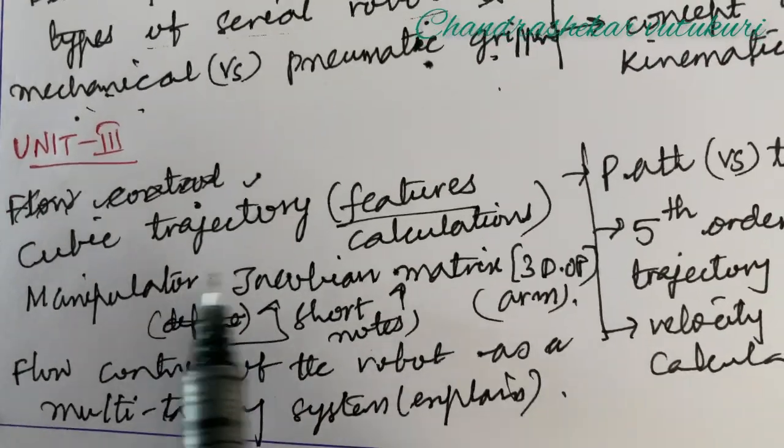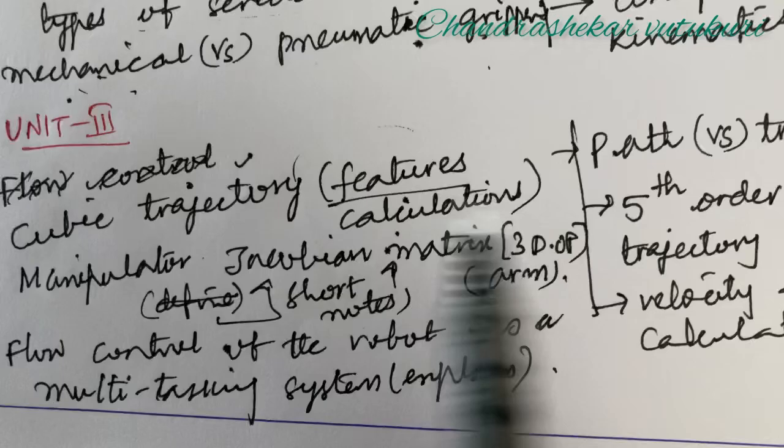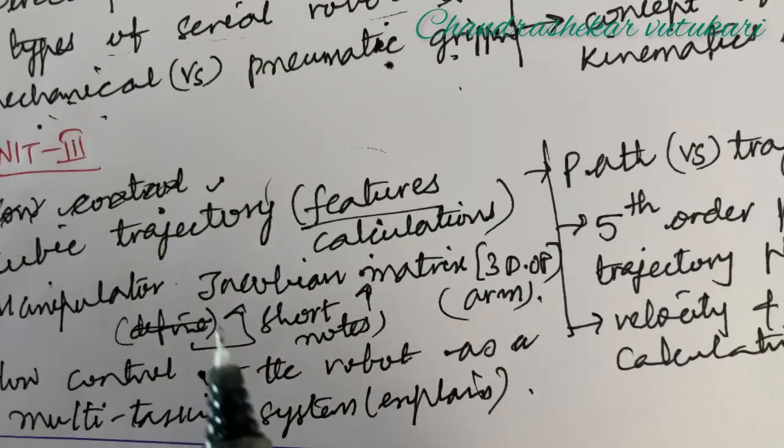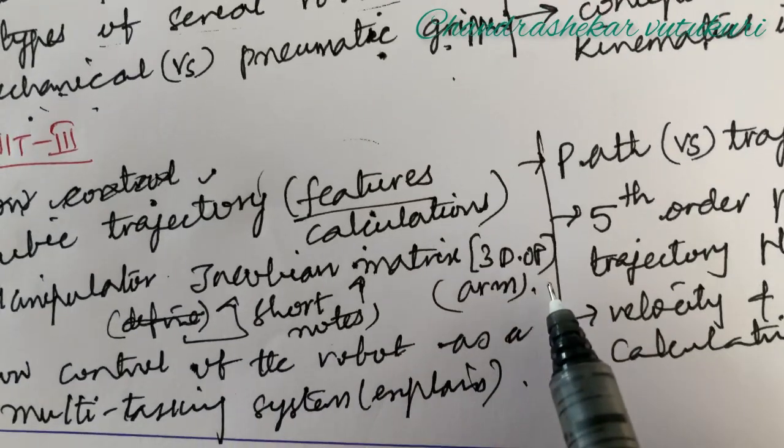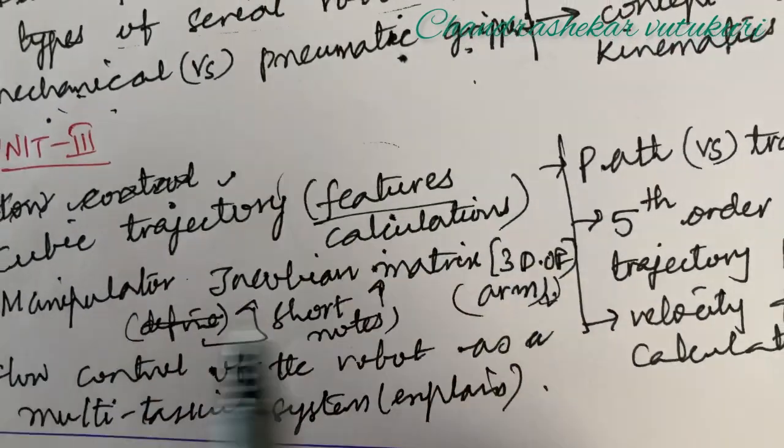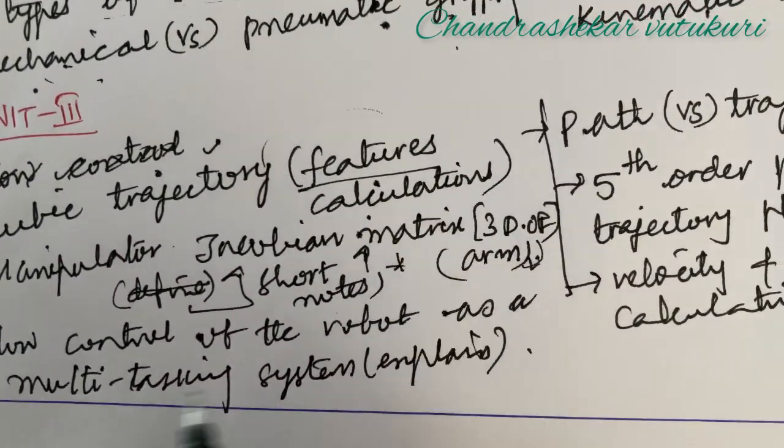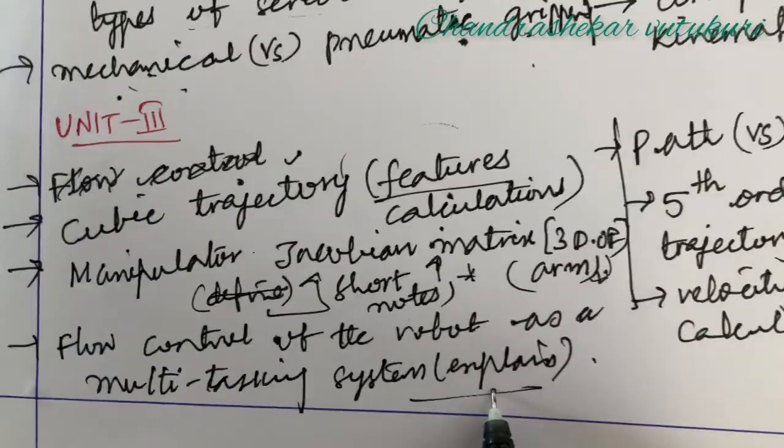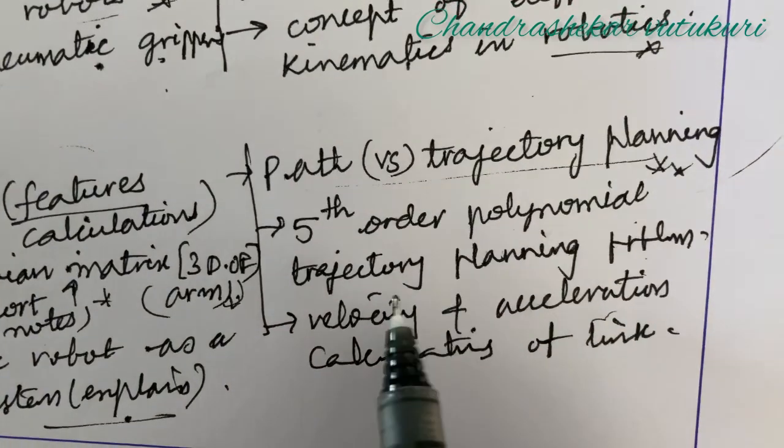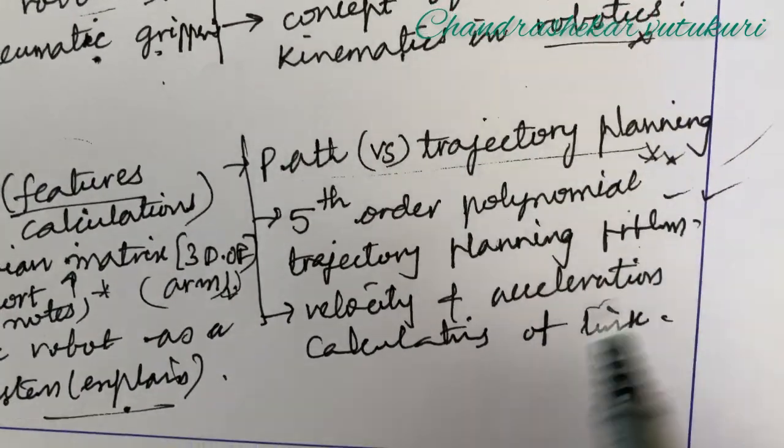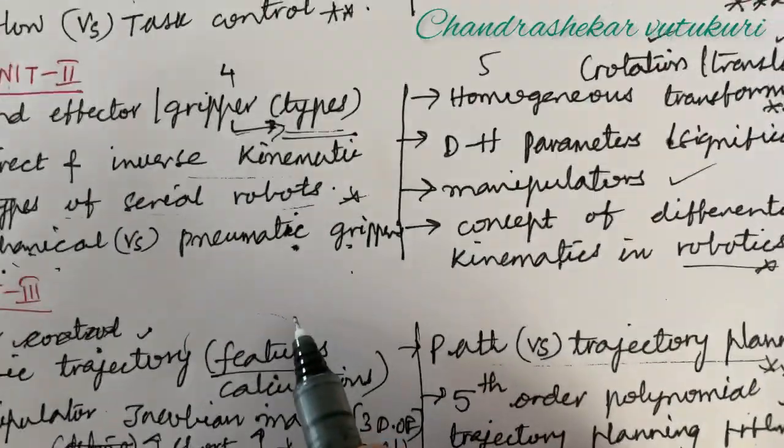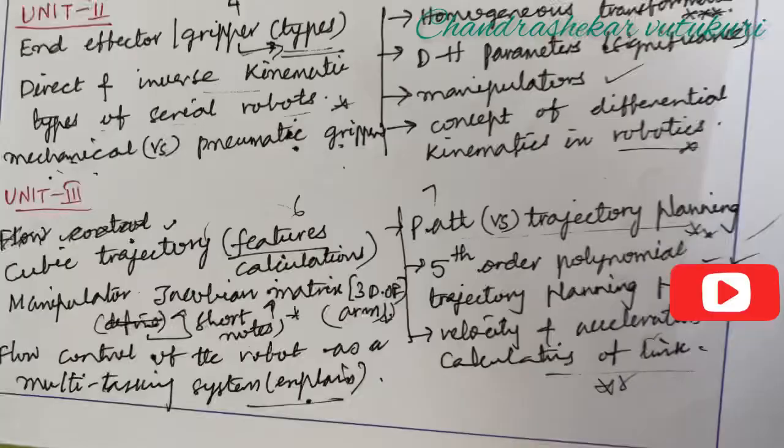Unit three is also a bit of certain derivations and calculations. Cubic trajectory, their features and calculation. If you want, you can go with the theory. Sometimes theory may also be asked so that you could be able to work out to score better. Manipulator Jacobian matrix for a three degree of freedom of an articulated arm, and short notes on manipulator Jacobian matrix is set with a short question. Flow control of the robot in a multitasking system, explain the term as well as path versus trajectory planning is set with a short question or long question. Fifth order polynomial trajectory planning problems to be worked out, and velocity and acceleration calculations of a link also to be worked out.